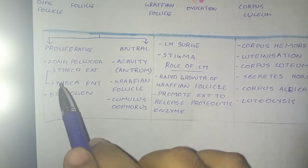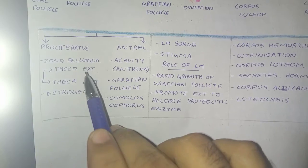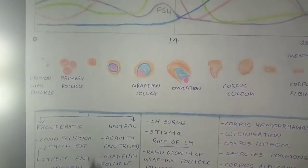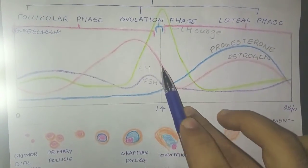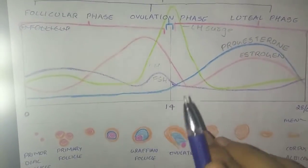There's a differentiation of theca, that is the theca externa and theca interna. Theca interna is producing the estrogen, which is shown here. This red region, the red colored line is the estrogen which has shown up here.